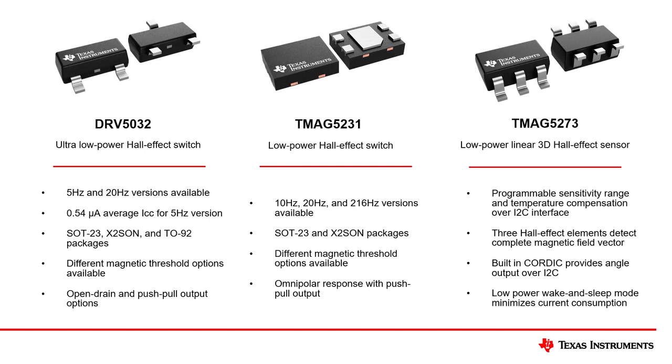The TMAG5273 is a system on a chip which is capable of measuring all three magnetic field vector components and providing the outputs over I2C. This device has an integrated CORDIC algorithm to calculate the angle of the sensed magnetic field and reduce the MCU processing need for calculating the angle.